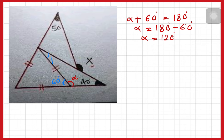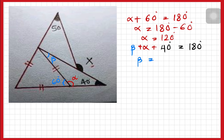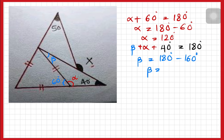This angle is beta. The sum of interior angles of a triangle is 180 degrees, so beta plus f plus 40 degrees equals 180 degrees. Beta equals 180 degrees minus 120 degrees plus 40 degrees, which equals 180 minus 160 degrees. So beta equals 20 degrees.